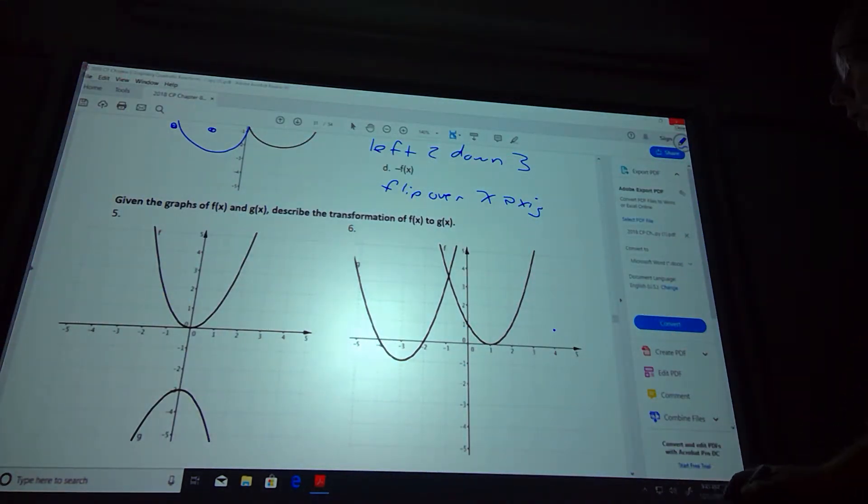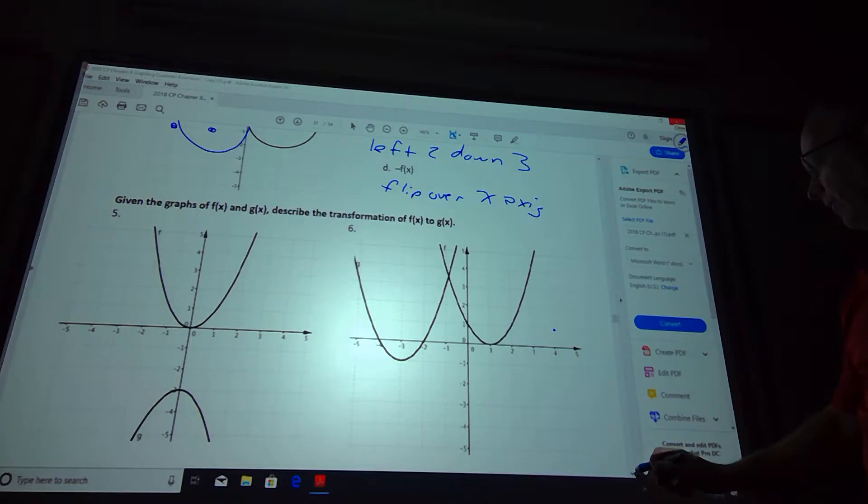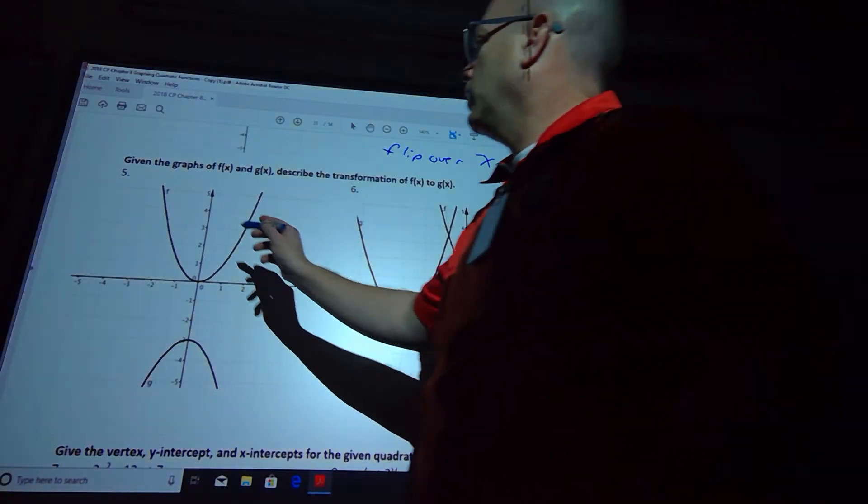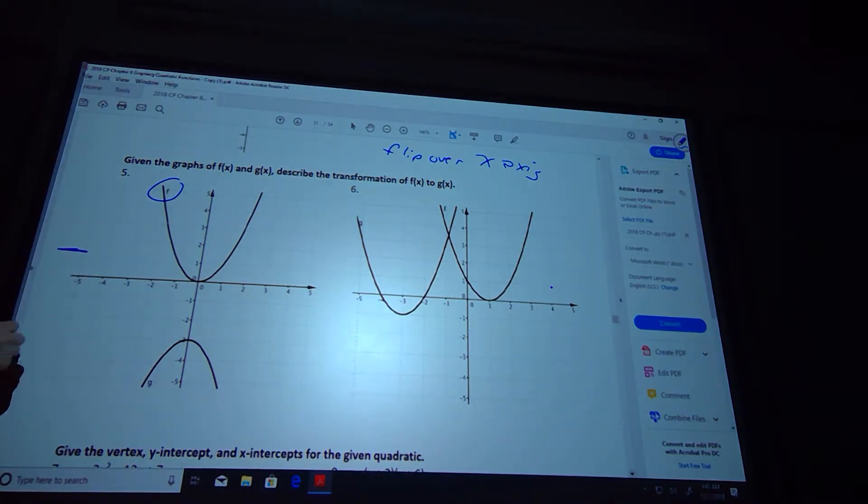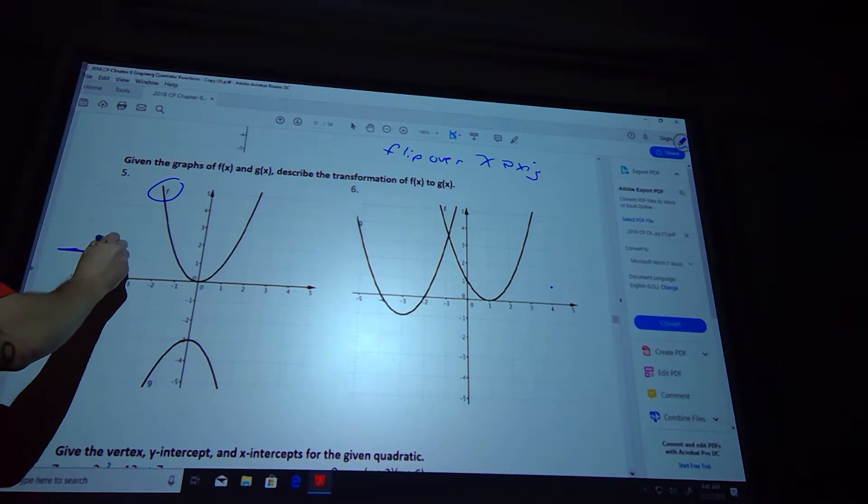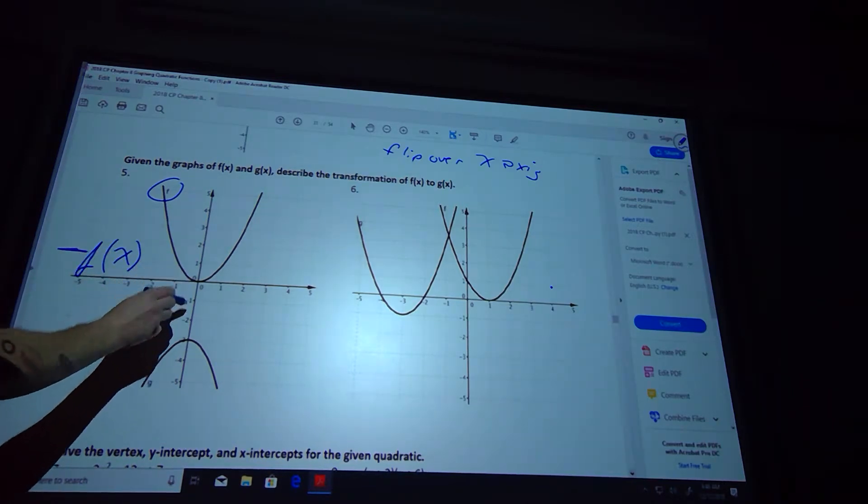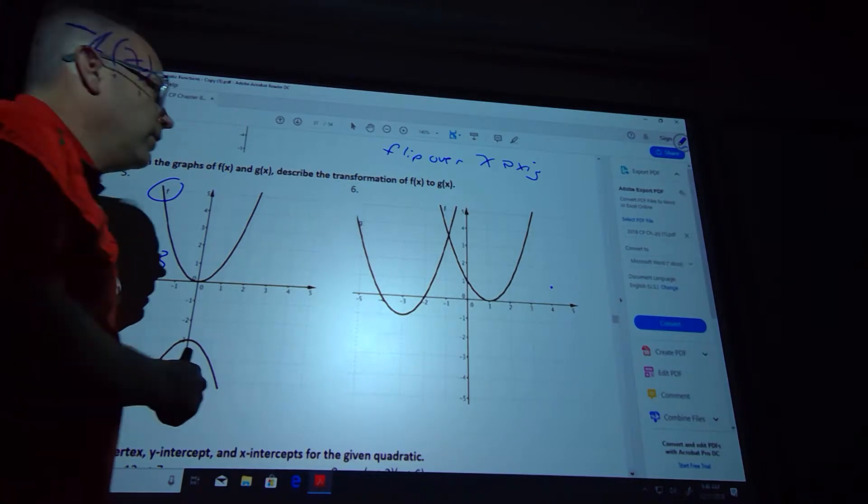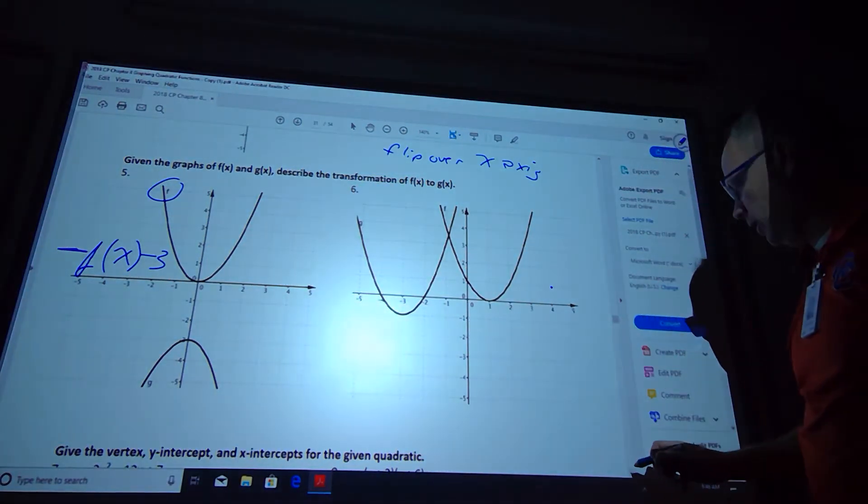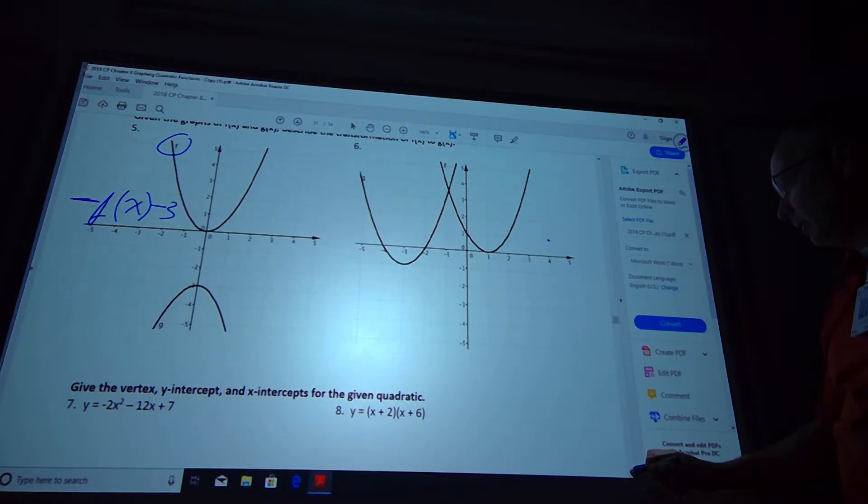All right. Describe the transformation on number 5. Let's see, which is the original? This one's our original one. So it flipped upside down. So I have a negative out front, f(x). And then it didn't shift right or left, so it's just f(x). And then it also moved down 3. So that's our transformation on number 5. So I flipped it over the x-axis, and then moved the whole thing down 3.